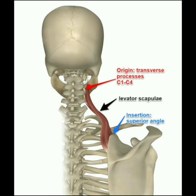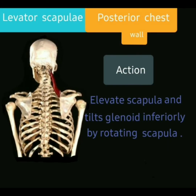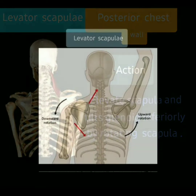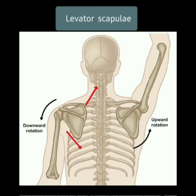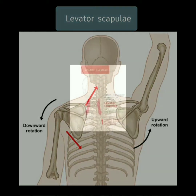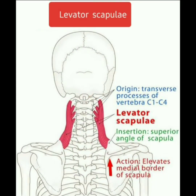Action: The levator scapulae muscle elevates the scapula and tilts the glenoid inferiorly by rotating the scapula. This image shows the action of the levator scapulae muscle, including upward rotation and downward rotation. This other image marks the origin, insertion, and action of the levator scapulae muscle.